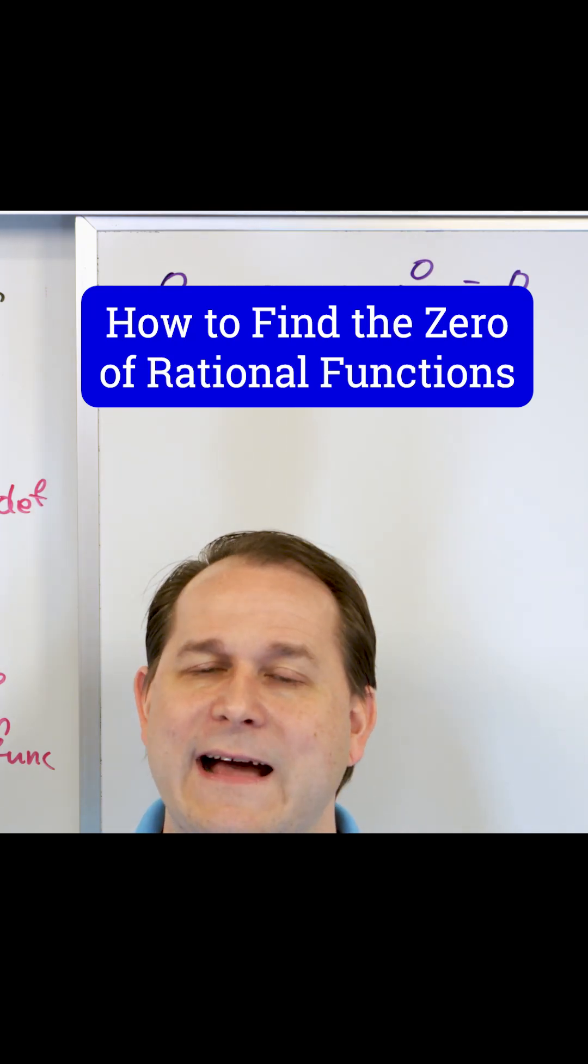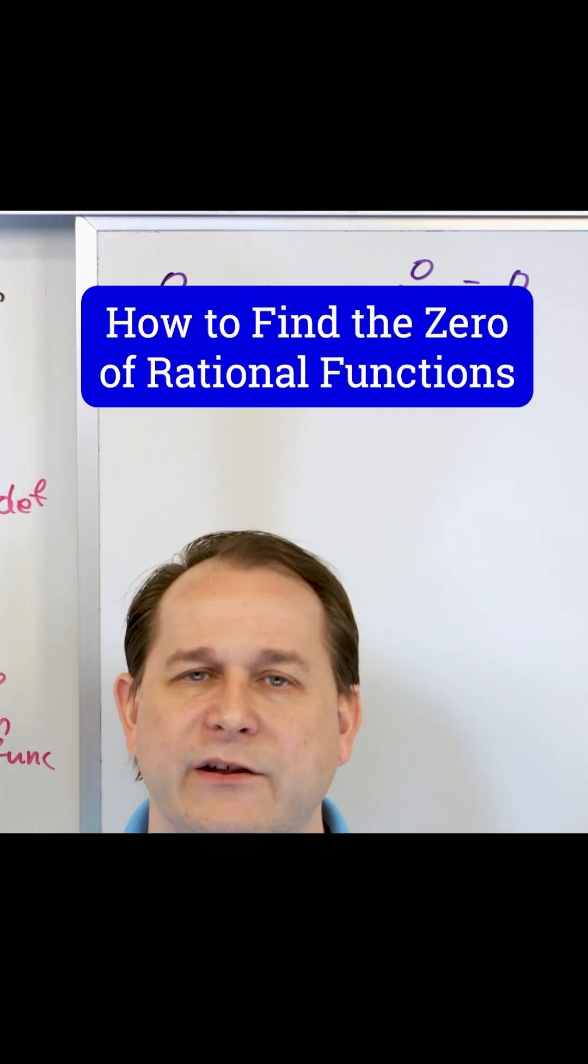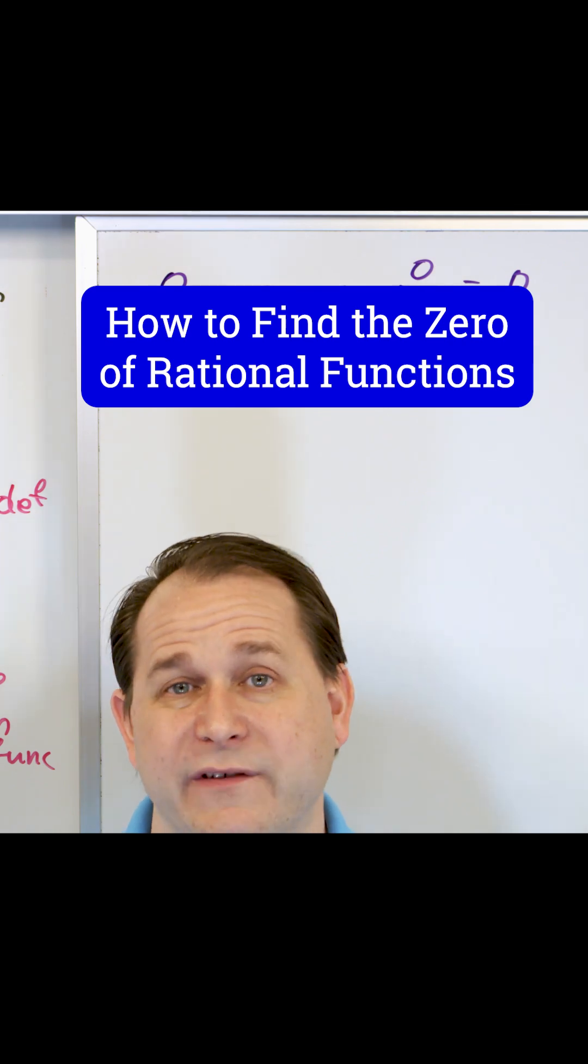To find the zeros of a function, that just means what places in the graph does the function actually go to zero?